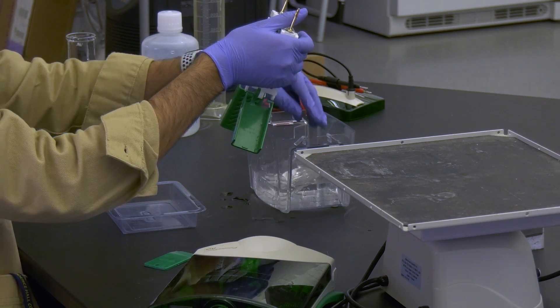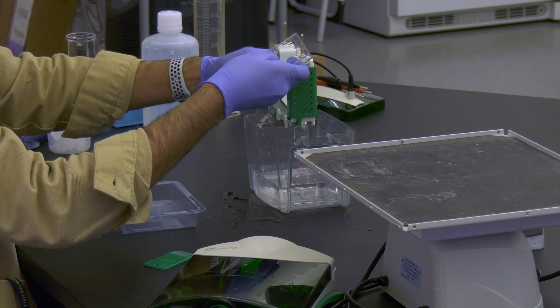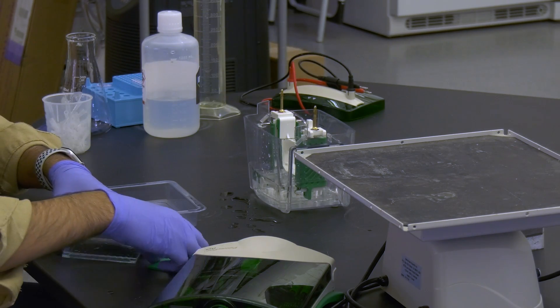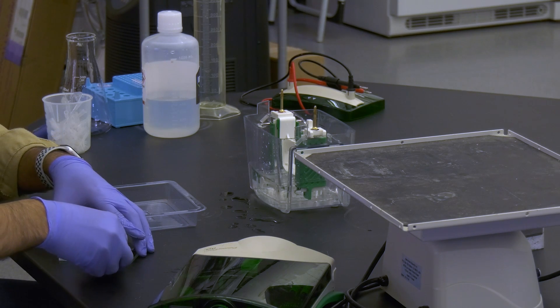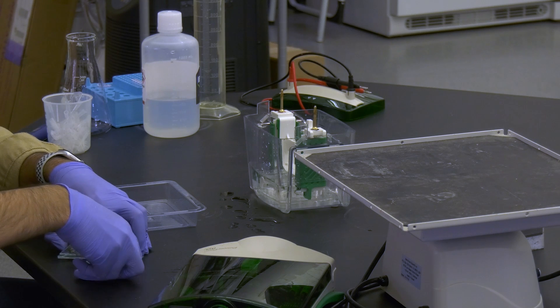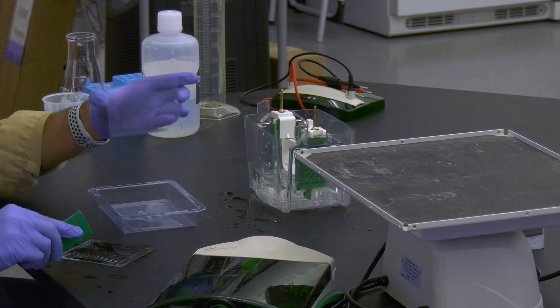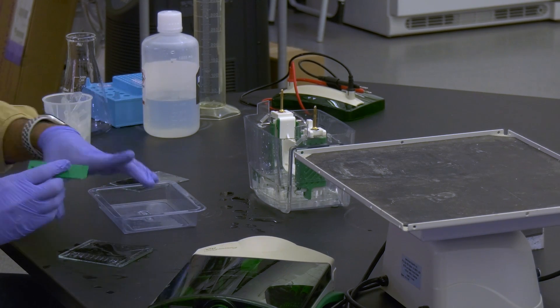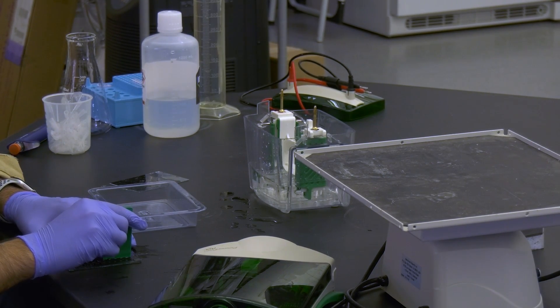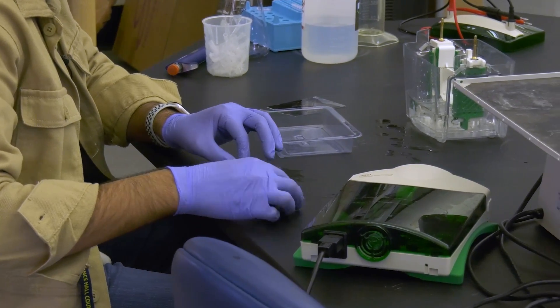So we'll take out our gasket and our gel plates. You're going to carefully lift up on the short plate. Once you have that off, you can go ahead and cut off your wells and lift up your gel.